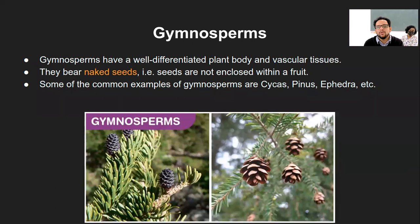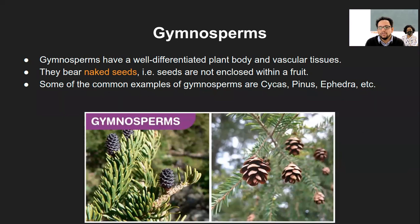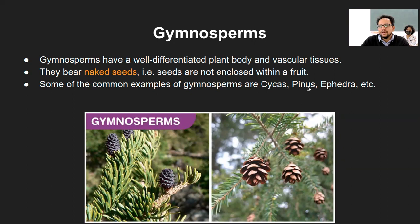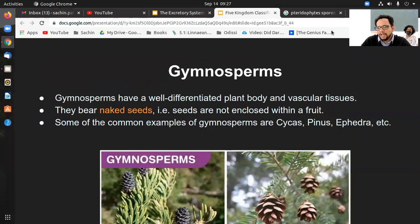The fourth category within kingdom Plantae is Gymnosperms. These are well differentiated with vascular tissues. The additional characteristic is the presence of seeds, but these seeds are not enclosed in a fruit — they are called naked seeds because they are not enclosed within any fruit structure, unlike angiosperms. After fertilization, these seeds grow without any fruit wall. Common examples are Cycas, Pinus, and Ephedra.